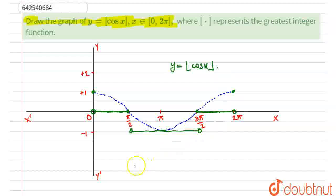That would be the graph of y equals cos x, denoted by green. Thank you.